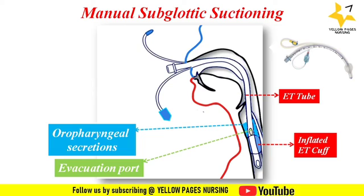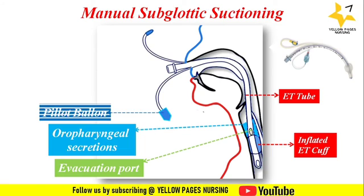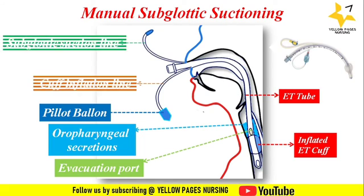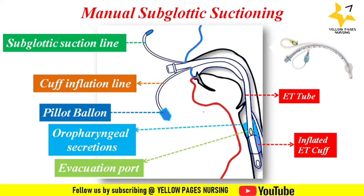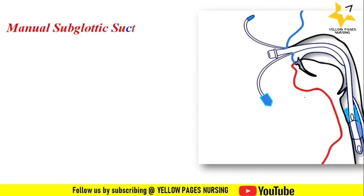Oropharyngeal secretions accumulate above the cuff. There is a pilot balloon for inflating the cuff. The ET tube has two lines: one for inflating the cuff and one for suctioning the subglottic secretions, which is called the subglottic suction line.